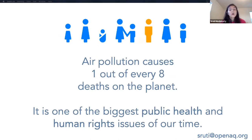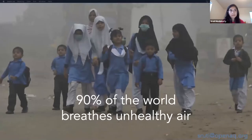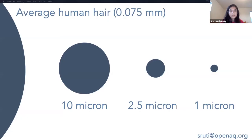Air pollution causes one out of every eight deaths on the planet. It is one of the biggest public health and human rights issues of our time. According to the World Health Organization, over 90% of the world breathes unhealthy air. Public health experts have determined that particulate matter is the most dangerous to human health because of its size. Particulate matter that is 2.5 microns in diameter, commonly known as PM 2.5, is small enough to penetrate our lungs and even enter the bloodstream,